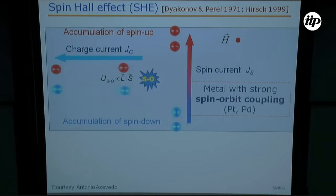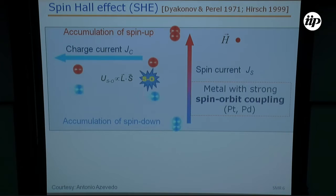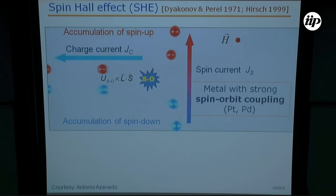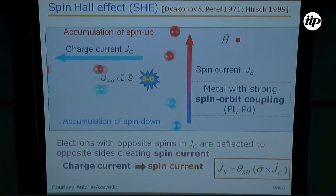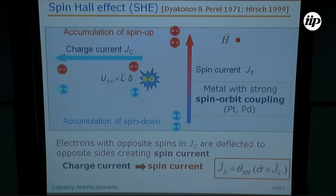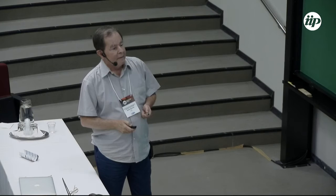We can see this in animation. If we have a charge current and scattering that is sensitive to spin-orbit coupling, then electrons with spin up will be deflected upwards and electrons with spin down will be deflected downwards, so that L·S has the same sign. This effect allows one to convert a charge current to a spin current. JS is proportional to the charge current, and the coefficient is called the spin Hall angle. This spin Hall angle varies between 10 to 20 percent in some special cases.